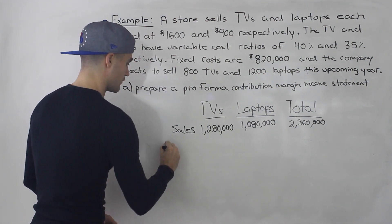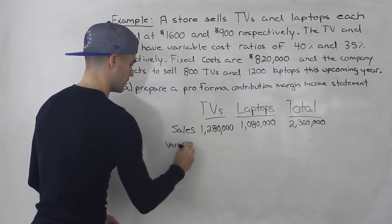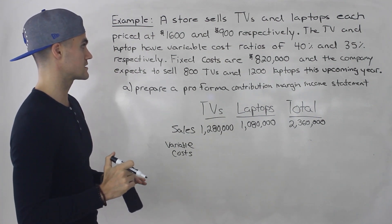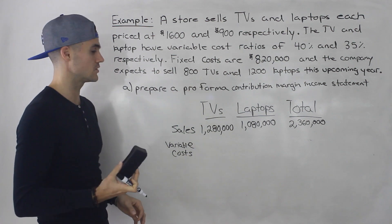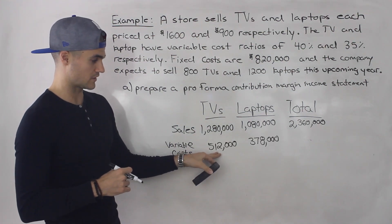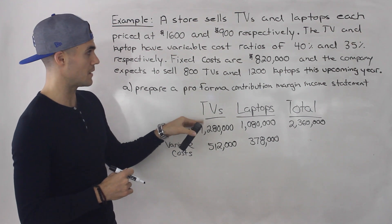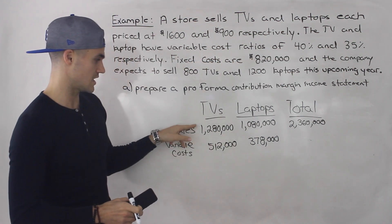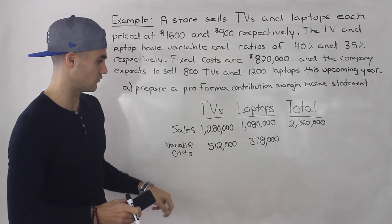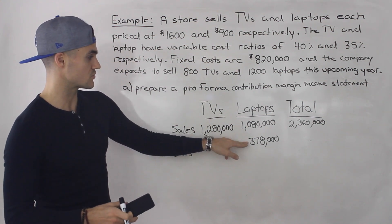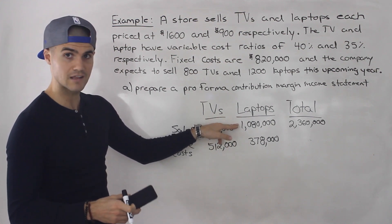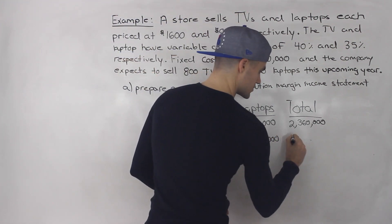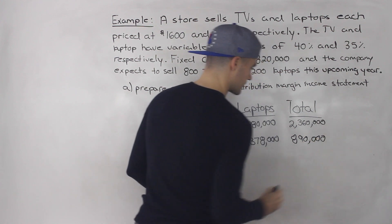Next we have the variable costs. Notice we're not given the variable cost directly — we're given the variable cost ratios. To get the variable cost, you take the sales number and multiply it by the variable cost ratio. For the TVs, the variable cost ratio is 40%, so 1,280,000 times 0.4 gives 512,000. For laptops, 1,080,000 times 0.35 gives 378,000. The company total is 890,000.